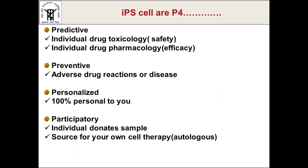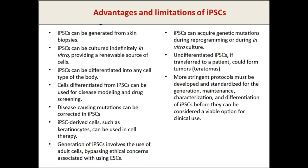To summarize iPSCs, they are P4: productive, preventive, personalized, and participatory. The most important advantage is that they can be used for autologous cell therapy — you take cells from the patient, generate iPSCs, induce pluripotency in the somatic cells, and navigate these cells toward the type of cells required. For example, if a patient has myocardial infarction, you can generate cardiac cells; if someone has Alzheimer's, you can form neuronal cells from somatic cells just by inducing reprogramming.